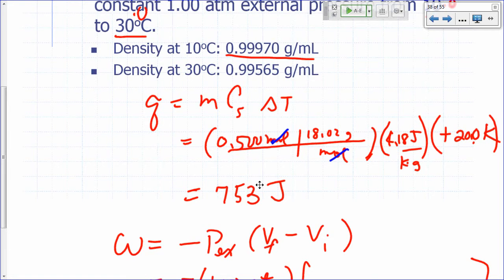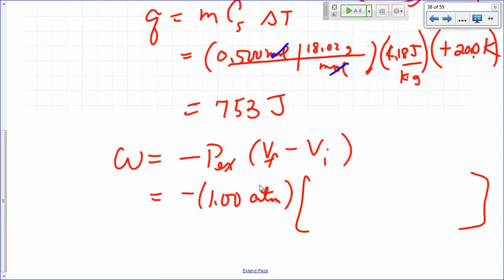What's our V final and what's our V initial? If you're given the density, how do you get volume from density? Density is mass over volume, right? So volume is mass over density. Volume final is the mass of the water divided by the final density minus initial volume is the mass divided by the initial density. The final density is at 30 degrees. The initial density is the density at 10 degrees Celsius.